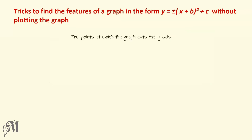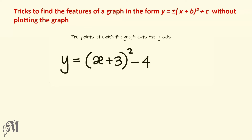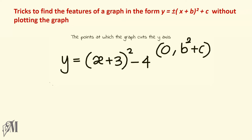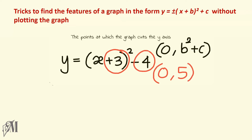Let us see how to find out the points at which a graph cuts the y-axis. Here the square is positive, therefore the graph will have a minimum. The coordinates at which the graph cuts the y-axis are given by (0, b squared plus c). In this equation, b is 3 and c is minus 4, so the coordinates will be (0, 3 squared minus 4) which is (0, 5). The graph cuts the y-axis at (0, 5).